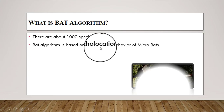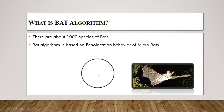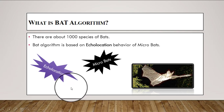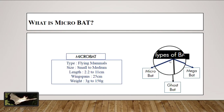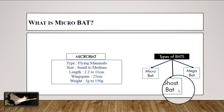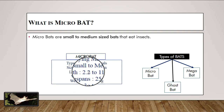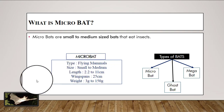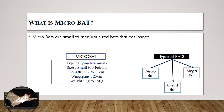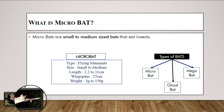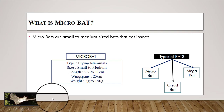We introduce two new terms: echolocation and microbat. There are different types of bats — microbat, mega bat, ghost bat — but we focus on microbats because the bat algorithm is based on their echolocation behavior. Microbats are small to medium sized bats that eat insects. They are flying mammals with a length of 2.2 to 11 centimeters, a wingspan of about 25 centimeters, and a weight of 3 to 150 grams.